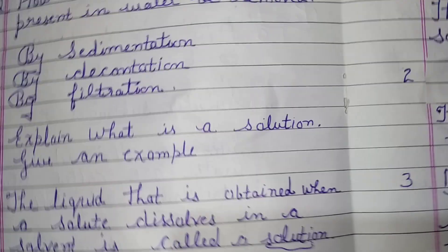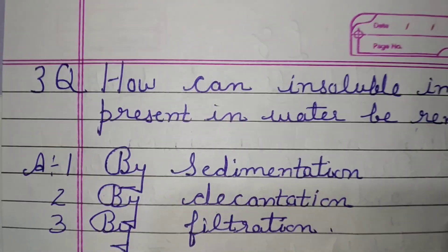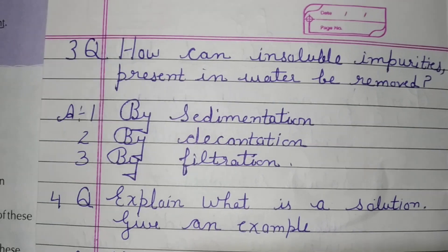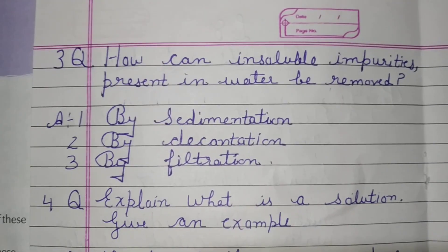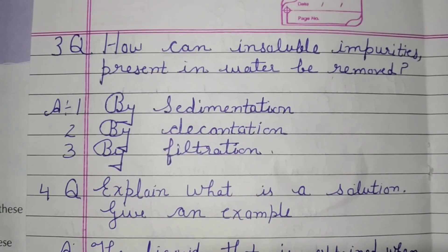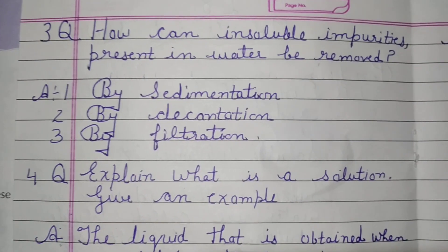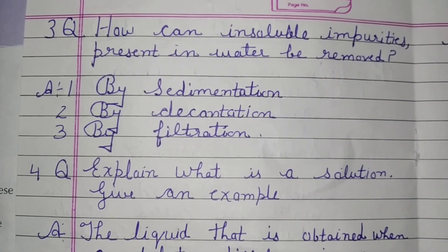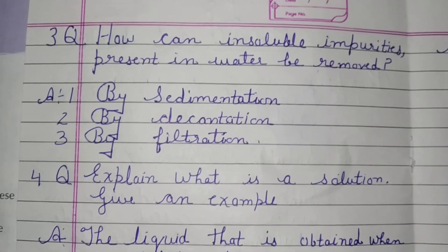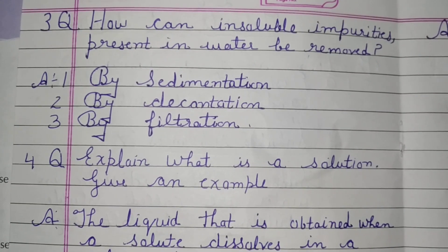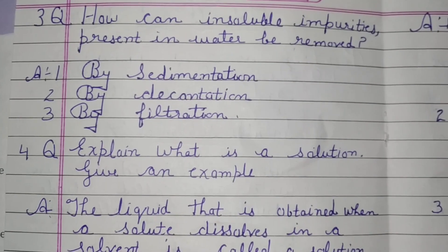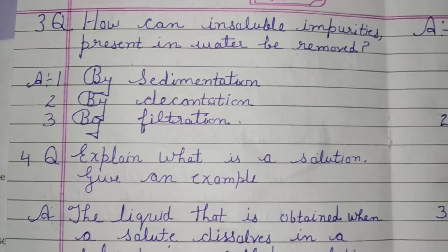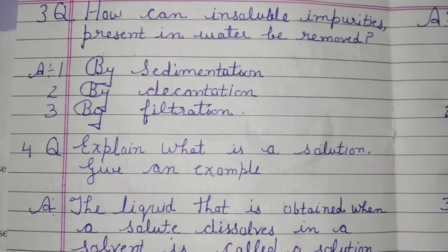Third question: How can insoluble impurities present in water be removed? Answer: 1. By sedimentation. 2. By decantation. 3. By filtration.